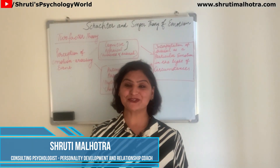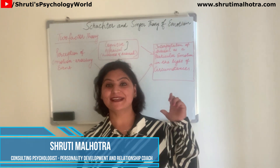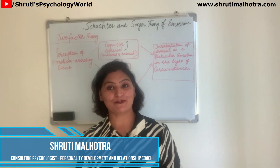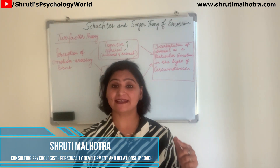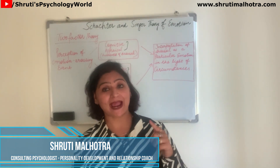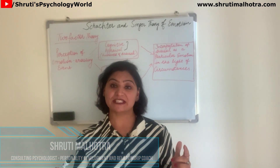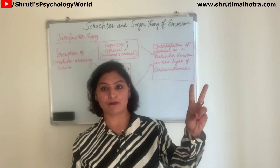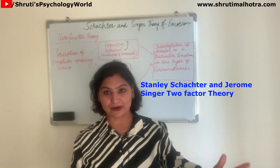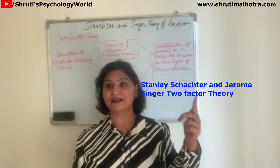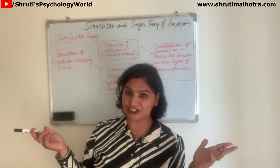Hello students, welcome back to Shruti Psychology World. Now it's time to study the third theory of emotion, called Schachter and Singer's theory of emotion. Stanley Schachter and Jerome Singer — their theory is called the two-factor theory of emotion. The two factors are cognitive appraisal and autonomic arousal, or physiological changes.